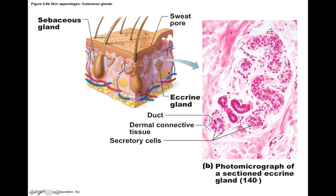Eccrine sweat glands are tubular glands that are highly coiled, embedded within the dermis. They drain into a duct which winds up and empties on the surface of your skin through a sweat pore. The way sweat actually gets up to the skin surface is via myoepithelial cells, which surround the ducts and essentially squeeze that fluid up and out of the duct toward the skin surface.